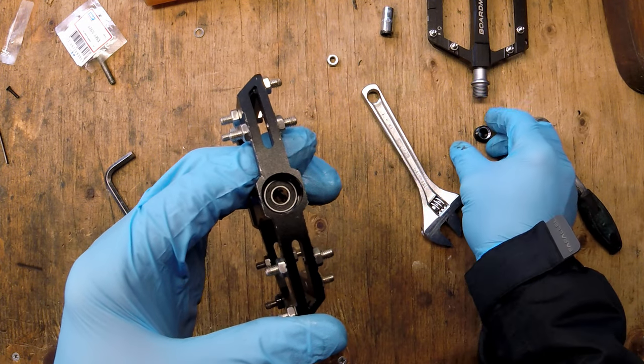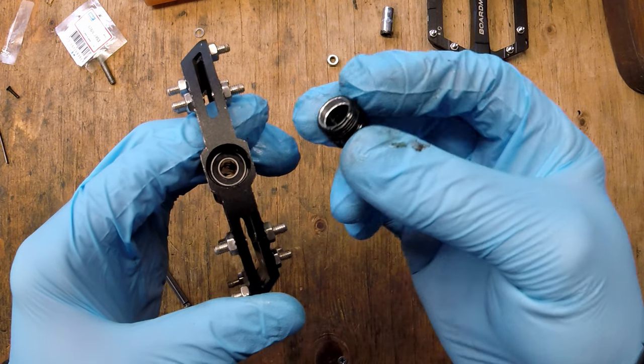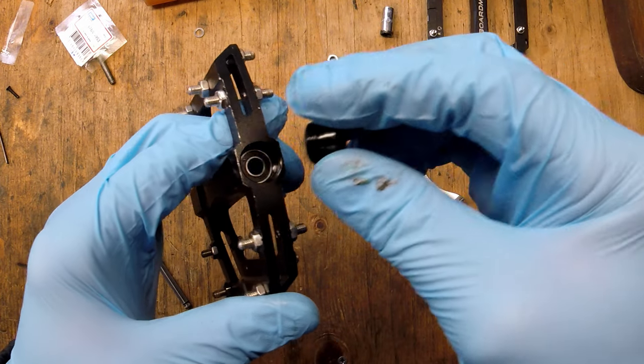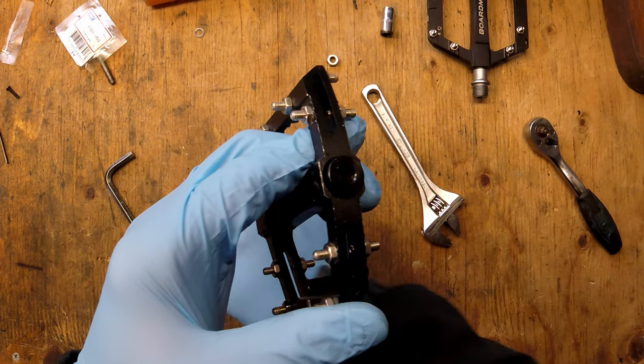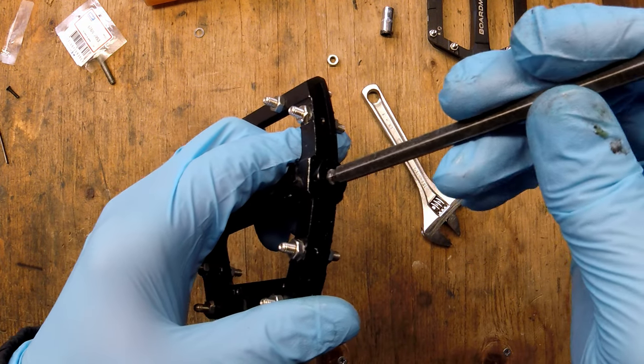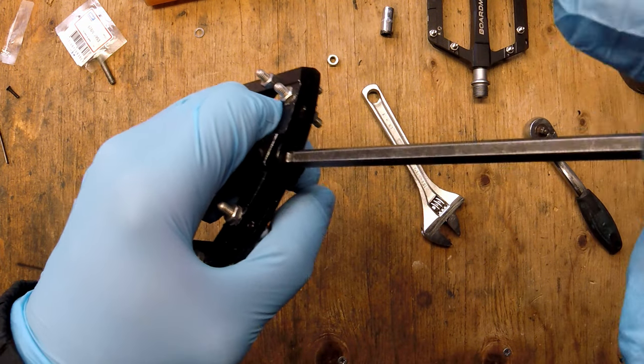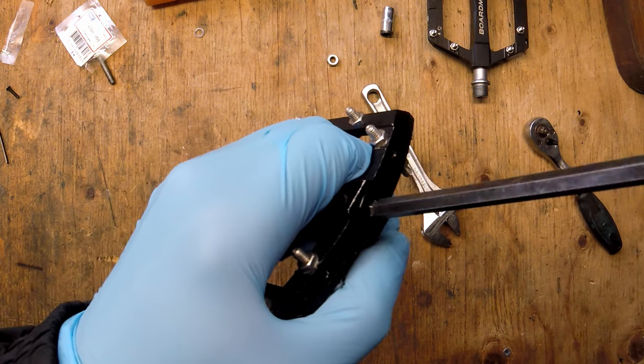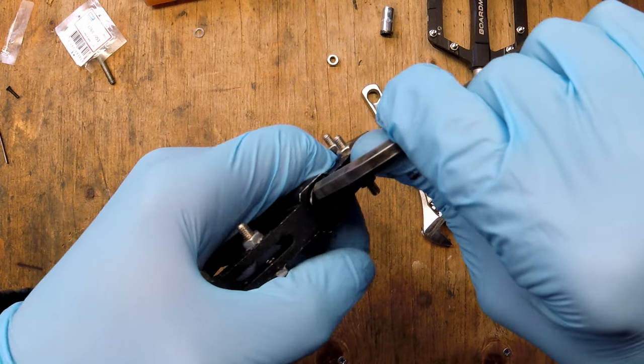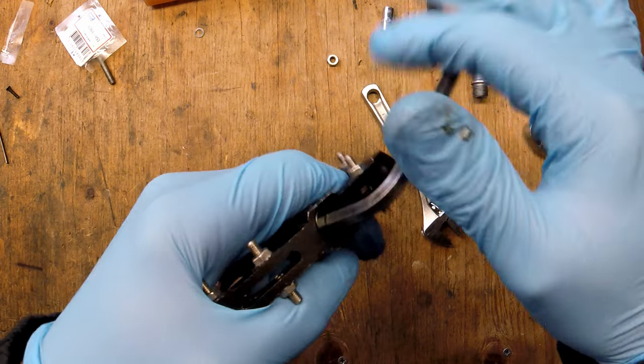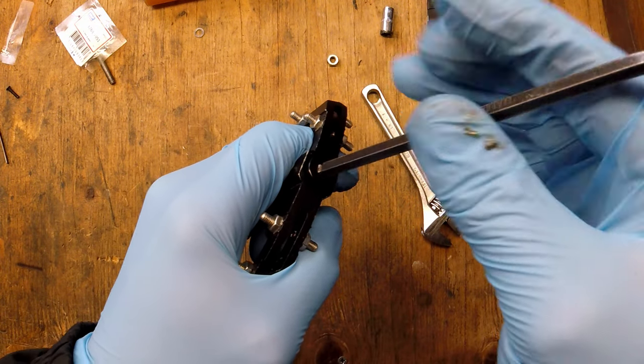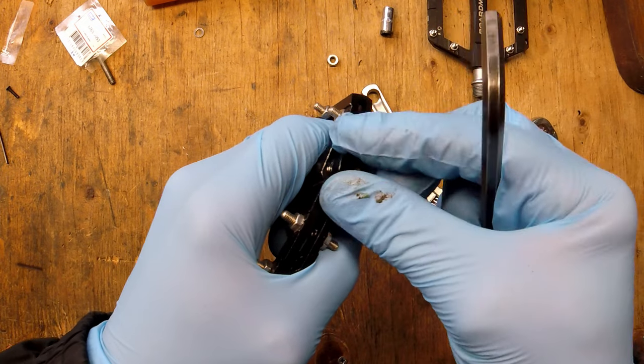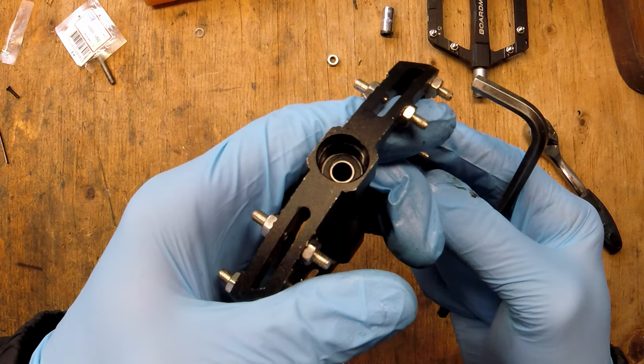And what you can do is you can use the bung or the cap out of the end of the pedal. Just to seat that bearing back down into place. It's a really neat way of just making sure that the bearing is back home as it should be. And then you can see the new bearing in there then.